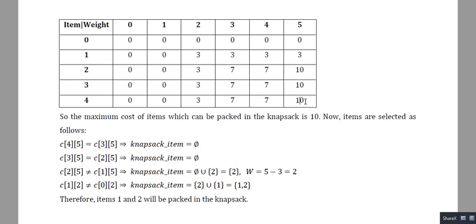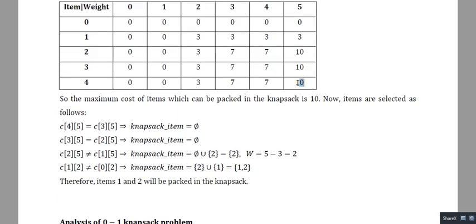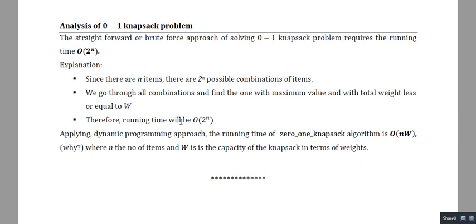To determine which items are selected, we apply a backtracking algorithm starting from the last entry. Starting at C[4][5] = 10: compare with C[3][5] = 10 — equal, so item 4 is not included. Compare C[3][5] = 10 with C[2][5] = 10 — equal, item 3 not included. Compare C[2][5] = 10 with C[1][5] = 3 — not equal, so item 2 is included. Remaining weight: 5 - 3 = 2. Then C[1][2] ≠ 0, so item 1 is also included. Items 1 and 2 are placed in the knapsack.